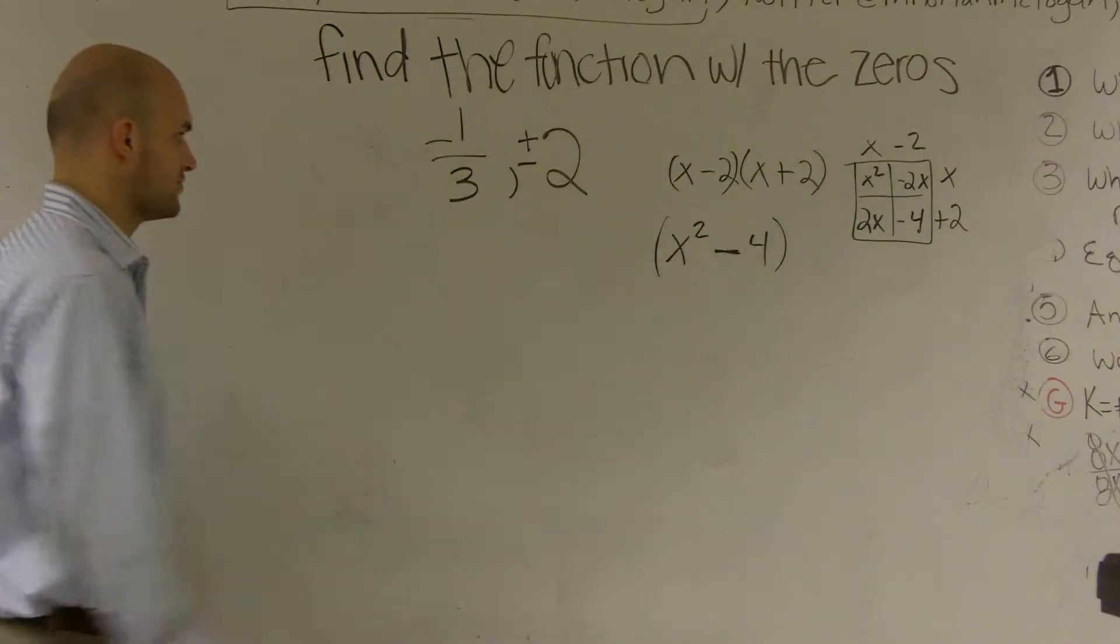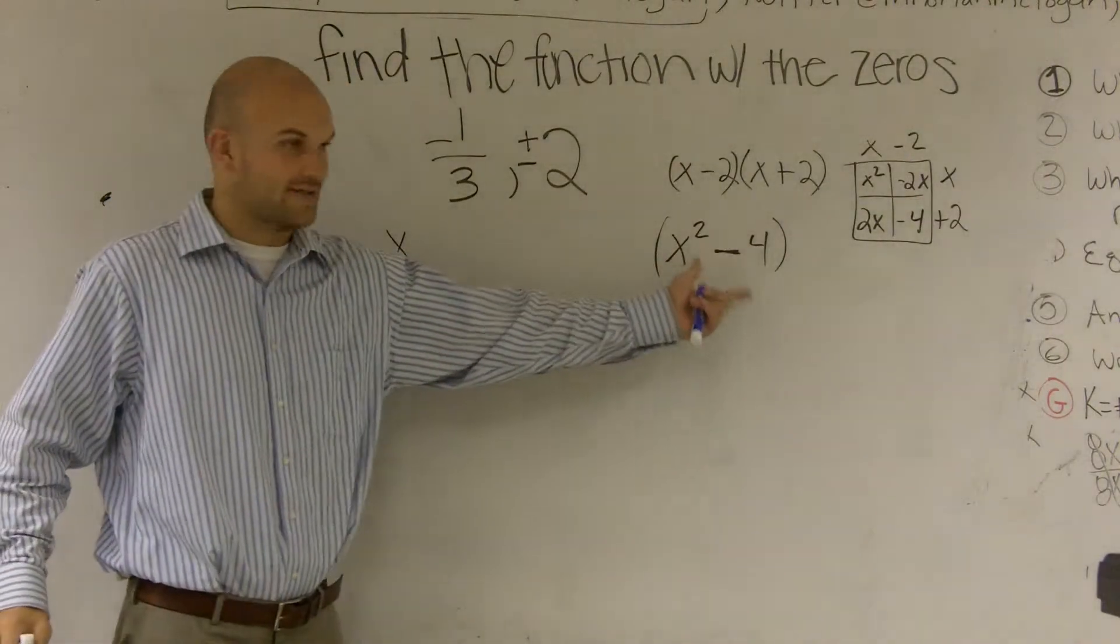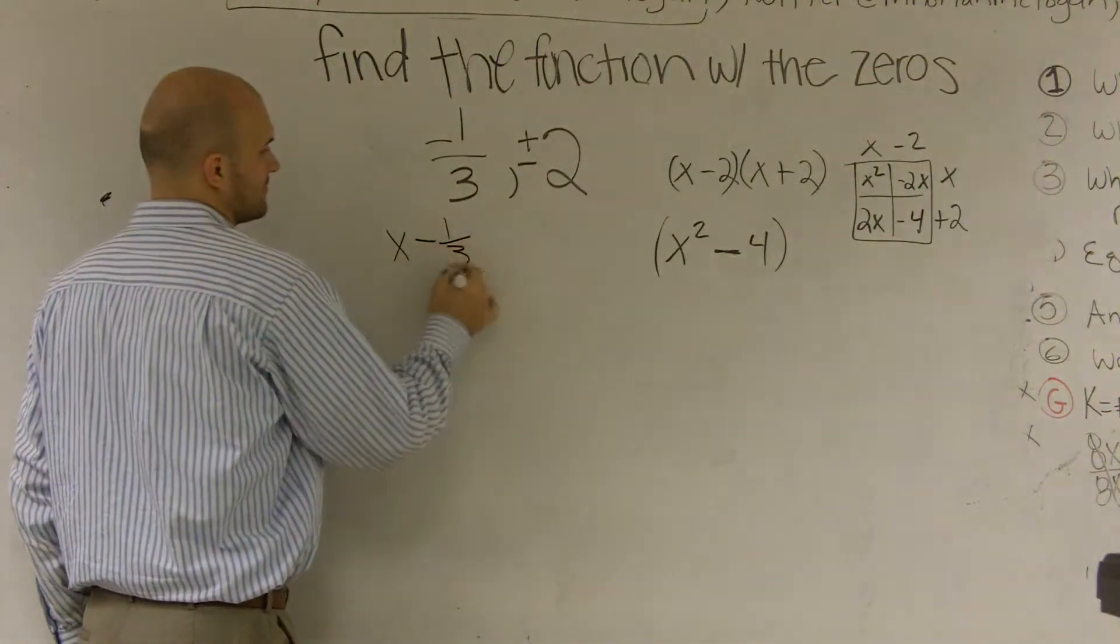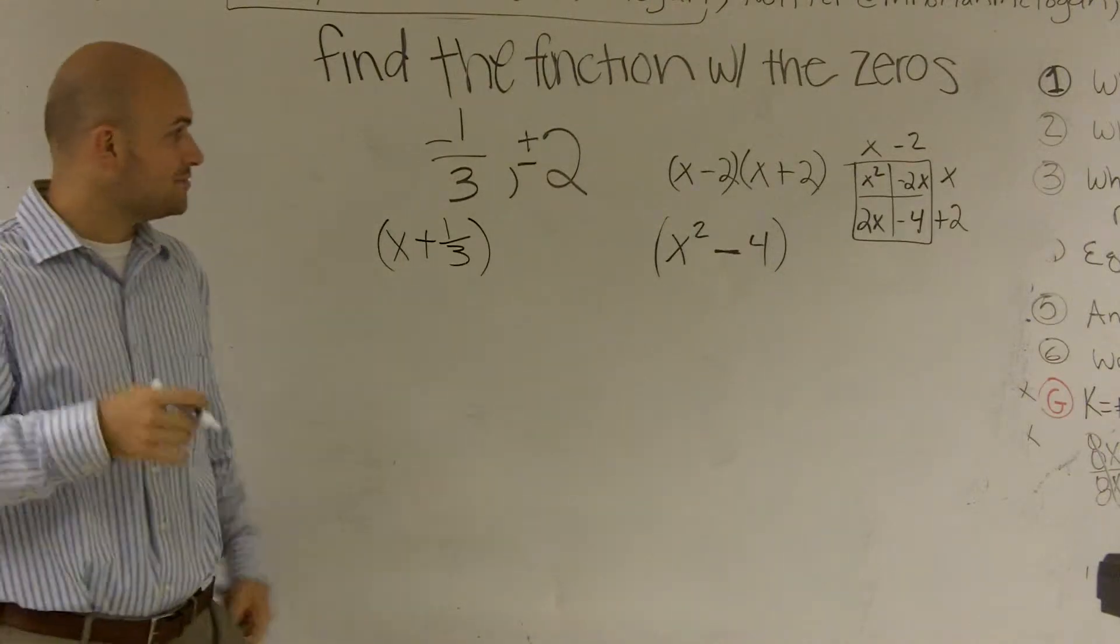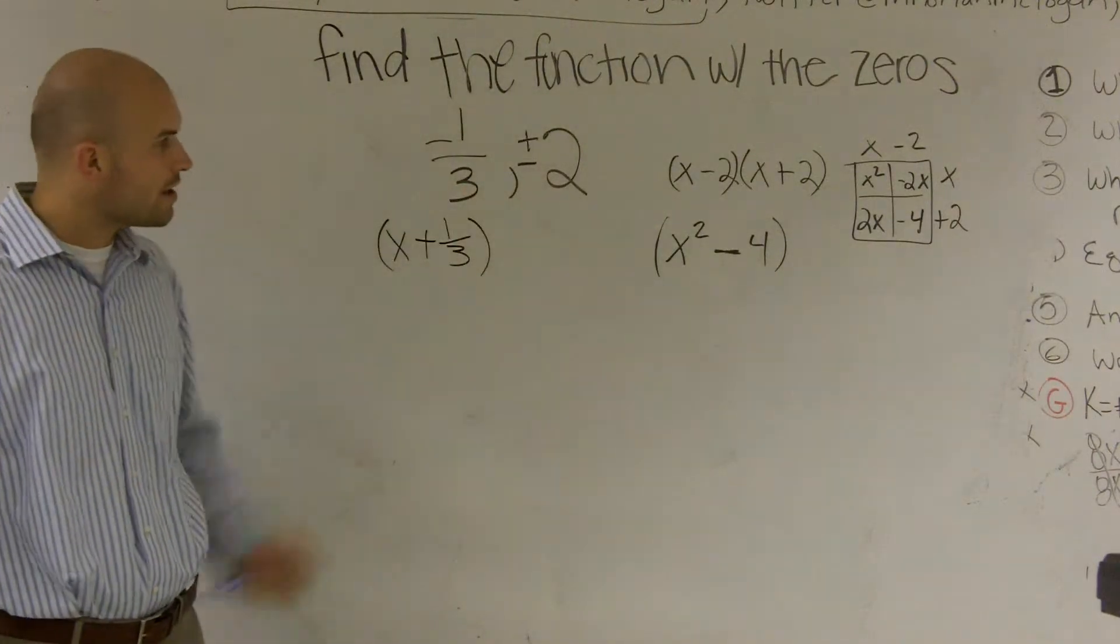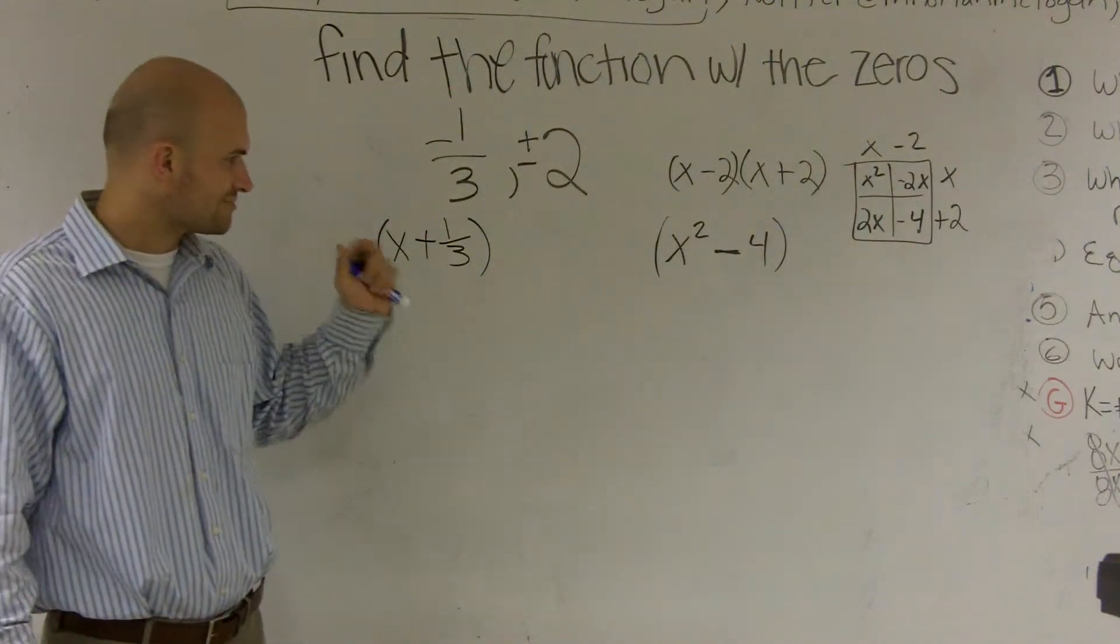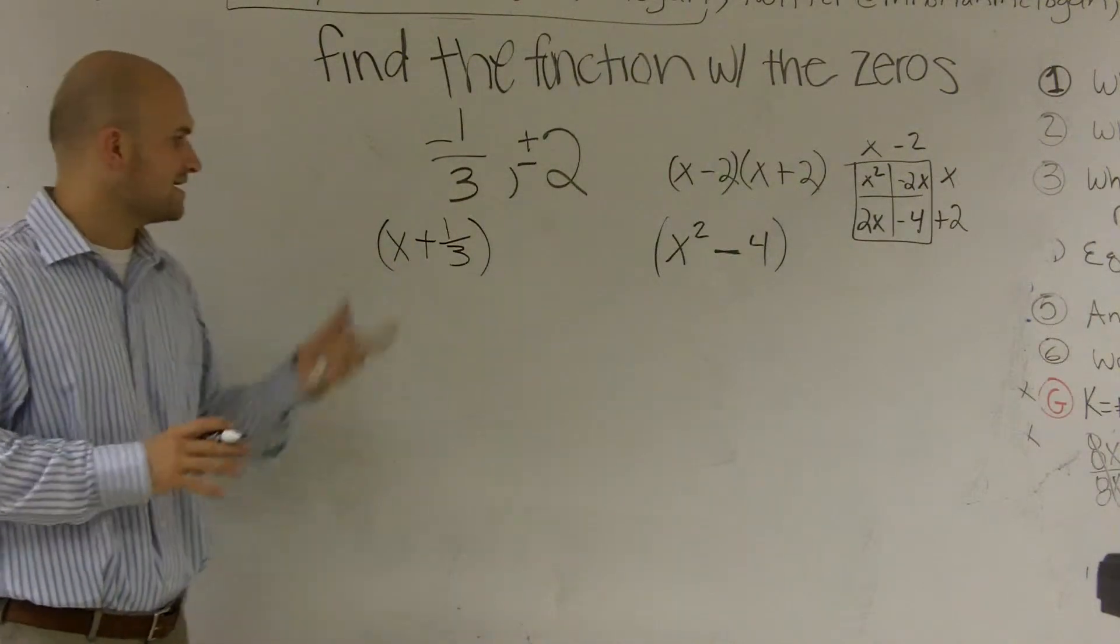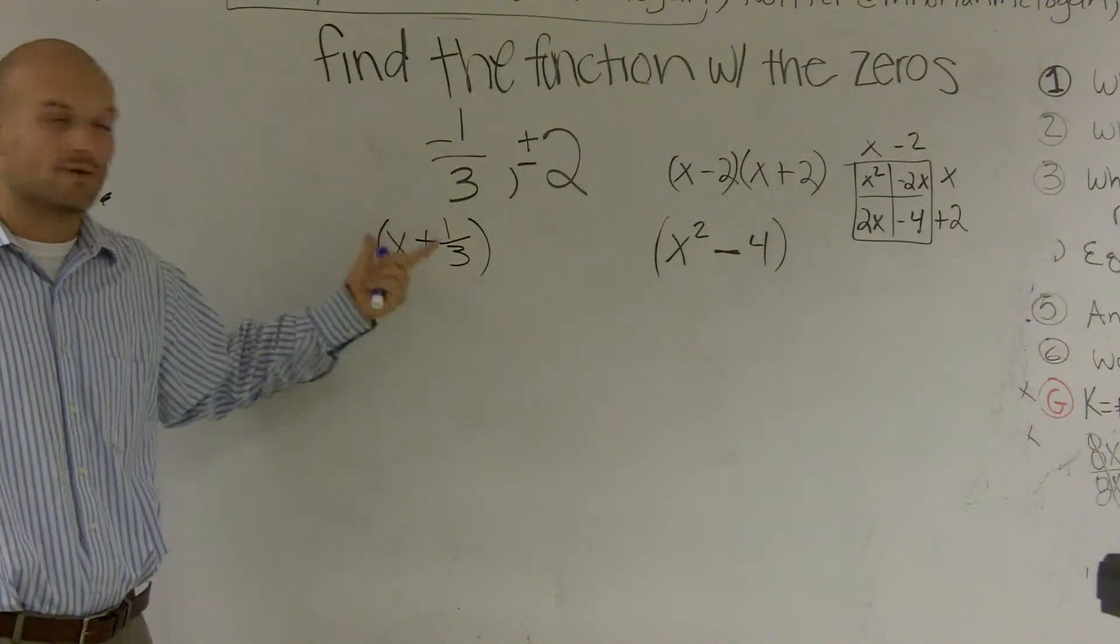Now we have x equals one-third. So I can write that as, here's one of two factors, right? We're going to have to multiply this by whatever x one-third is. It would be x plus one-third. One-third is my factor. Now, you could multiply one-third times that. There's really nothing wrong with that. You'd still get the same answer, but I don't like fractions. I don't like fractions either.